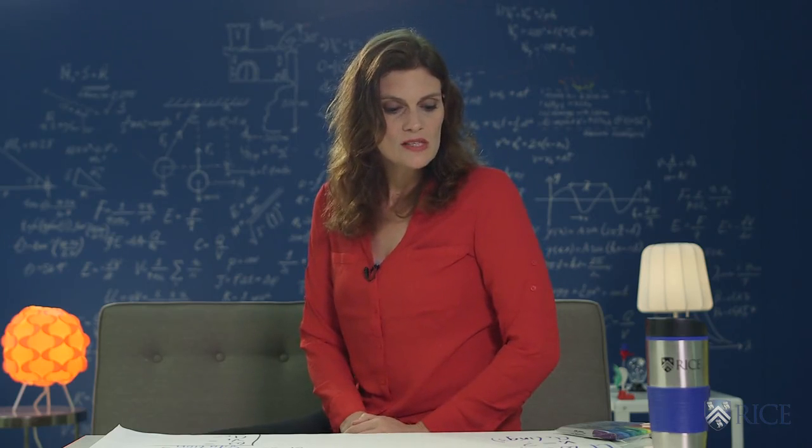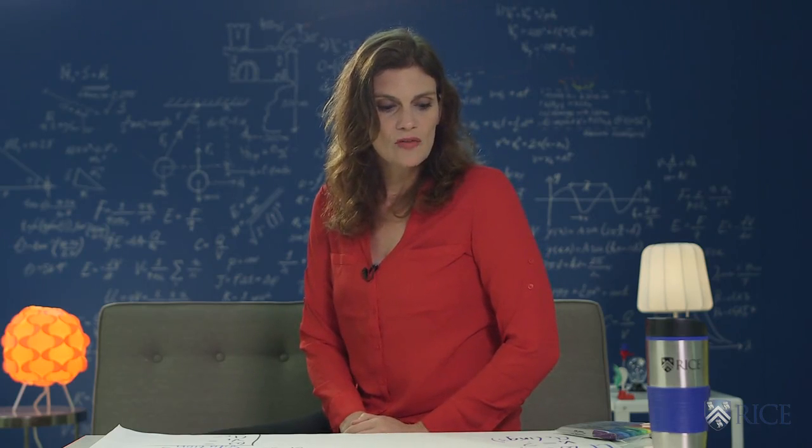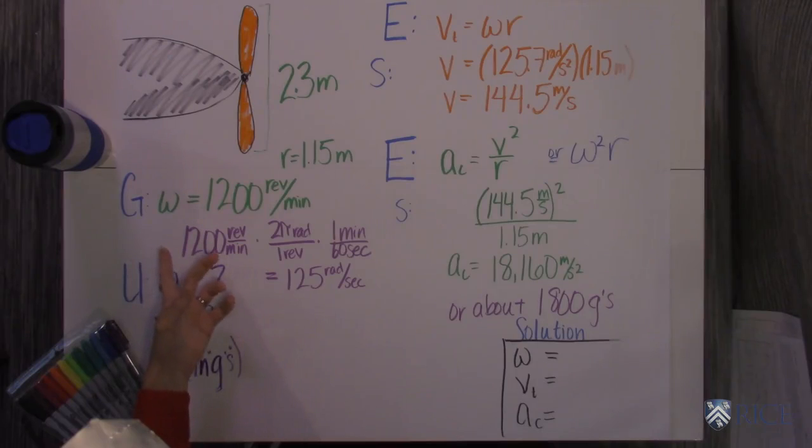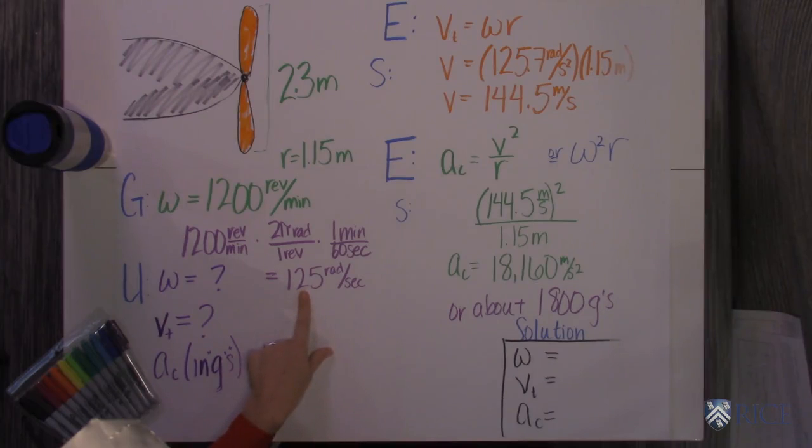So the first part of the question says we want to get the angular velocity in radians per second, so I like to do that right away. I like to get all of my units in what we call MKS or standard units, so I went ahead and did that. So you get 125 radians per second, then I put a vt.